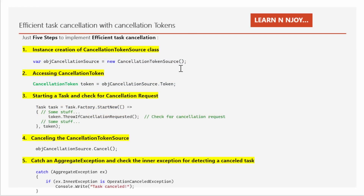Let's imagine you are working on a complex project managing multiple tasks simultaneously. We may need to cancel some of these tasks — how do you do it efficiently? That's where cancellation tokens come into play. We just need to follow five steps to implement task cancellation using the CancellationTokenSource class in C#.